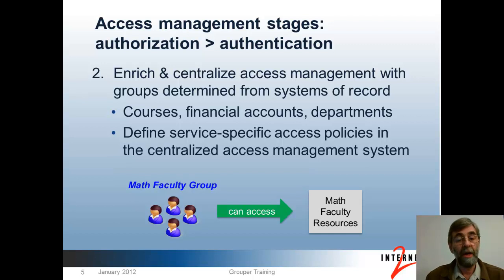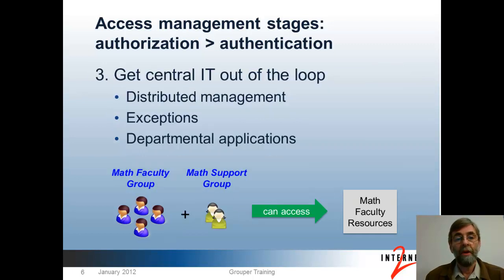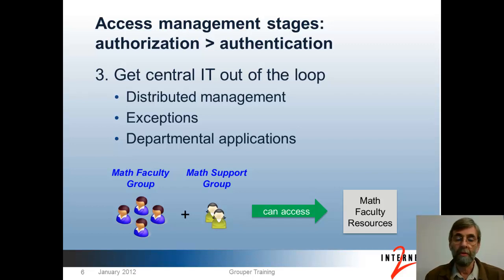For example, you might have the math faculty group as learned from a core business system and have a policy that says they can access math faculty resources. The third phase is focused on taking that centralized access management infrastructure — the database, management interfaces, and integration components — and allowing others, in addition to central IT, to use them. You begin to distribute management to departmental IT, manage exceptions from individuals or ancillary systems, and let departments manage access on the common infrastructure so they don't have to build their own.